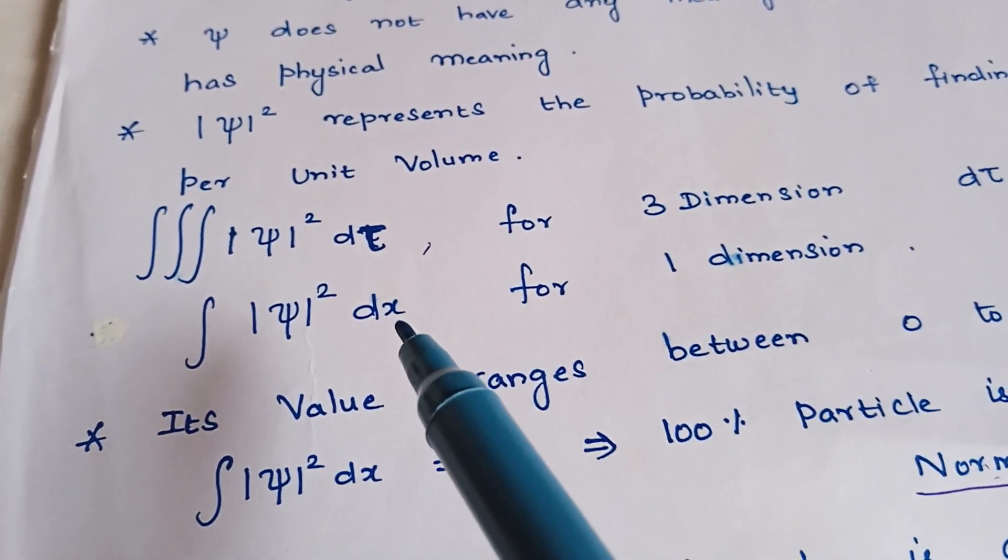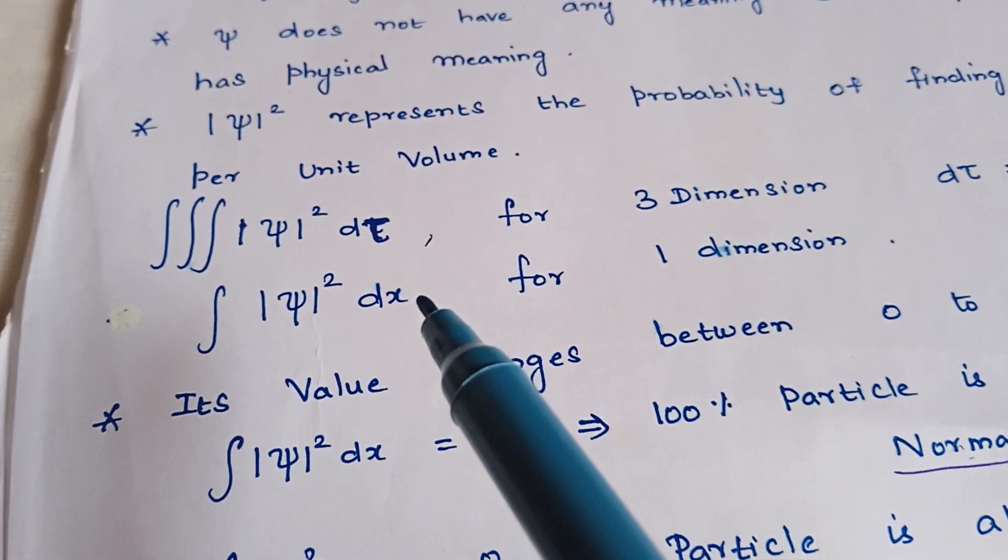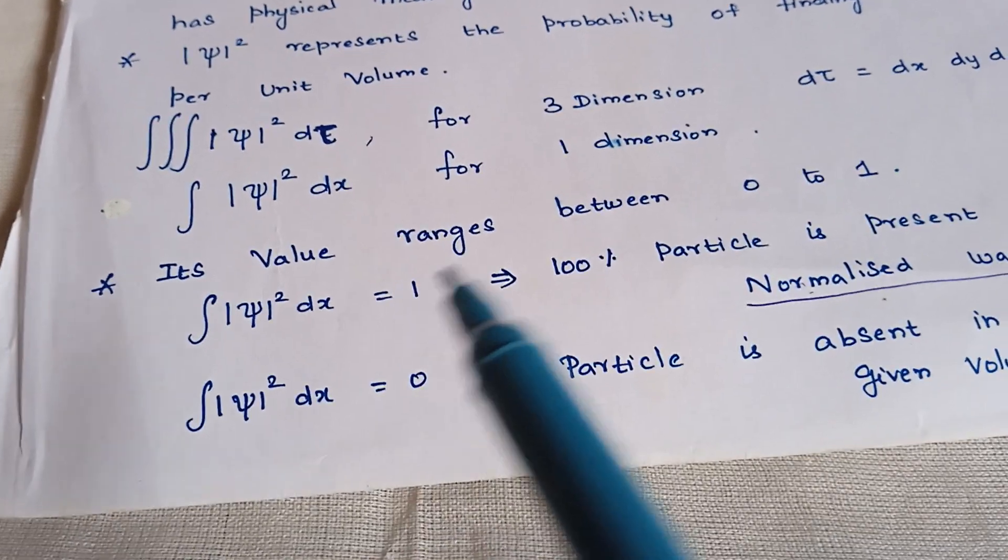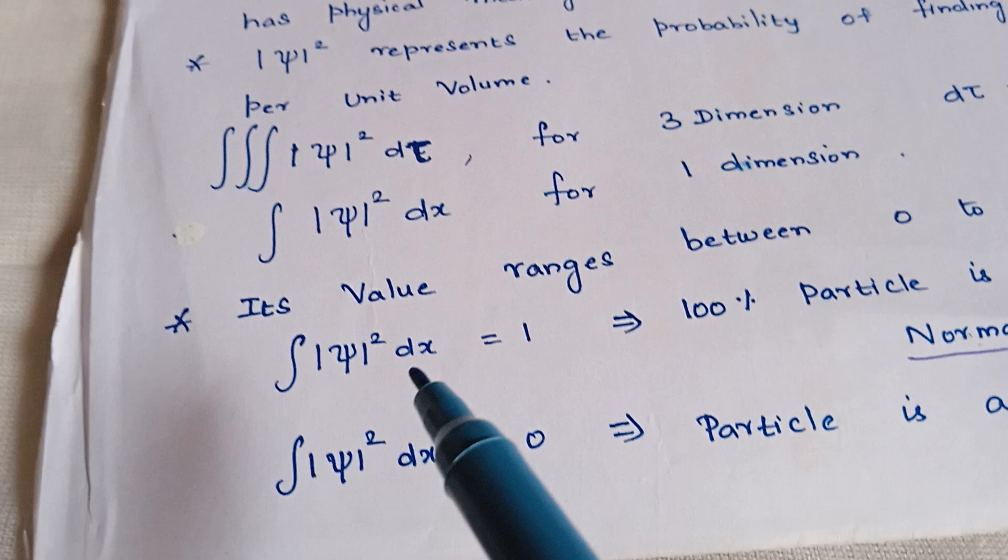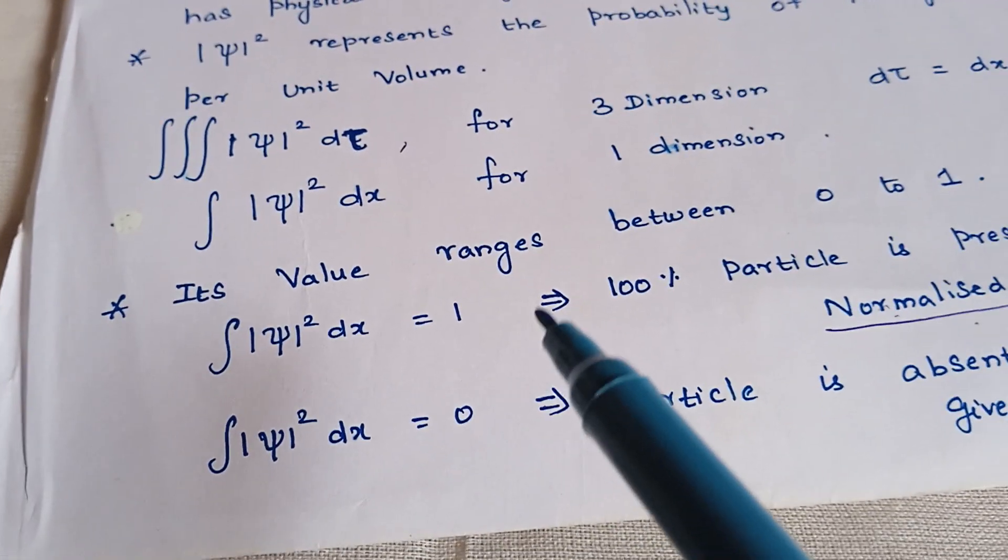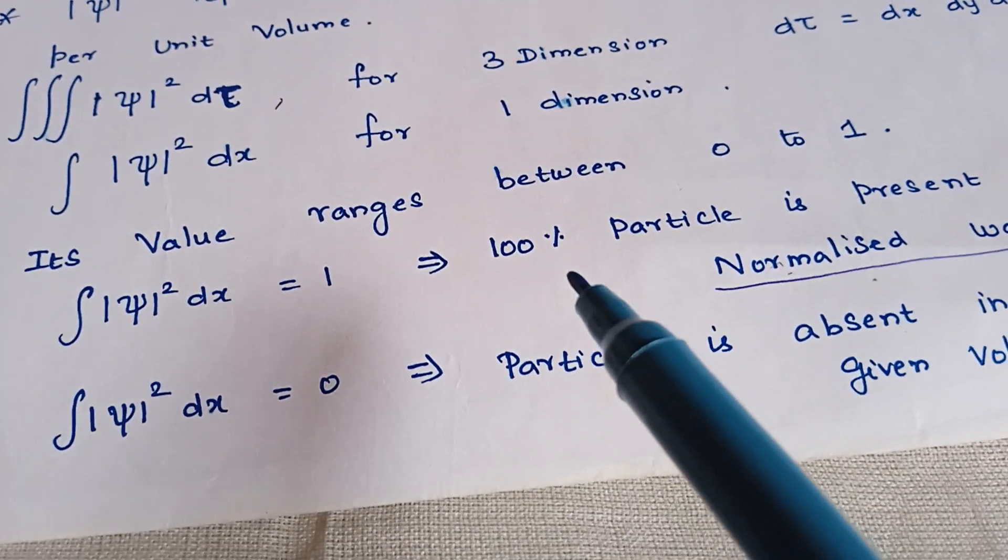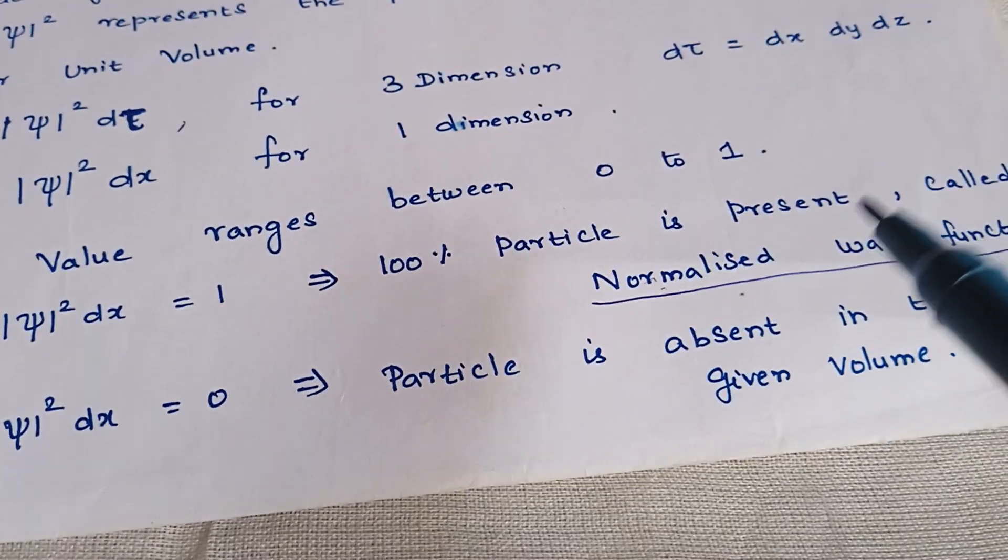The probability value ranges between 0 to 1. If the probability value is equal to 1, then it represents 100% the particle is present in the given volume.